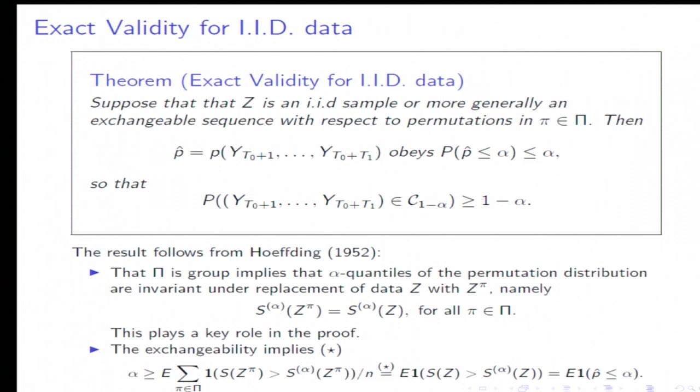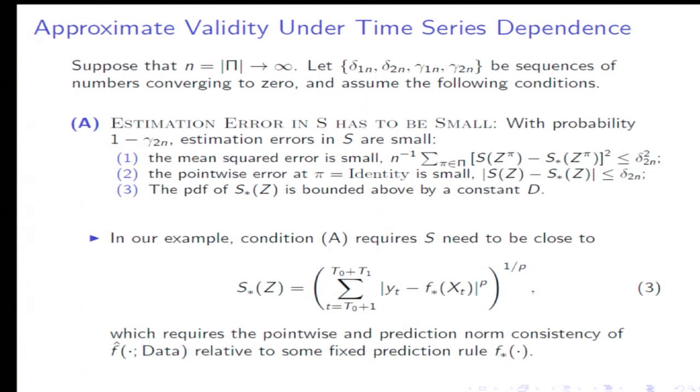This immediately implies that the confidence set that we've constructed covers the true trajectory with at least the prescribed probability. This directly follows from Hoeffding's argument, which critically relies on this pi being a group, which implies the invariance of quantiles of the permutation distribution under reshuffling of the data. Combined with the exchangeability hypothesis, it immediately implies the results. So the proof is just like these two lines.